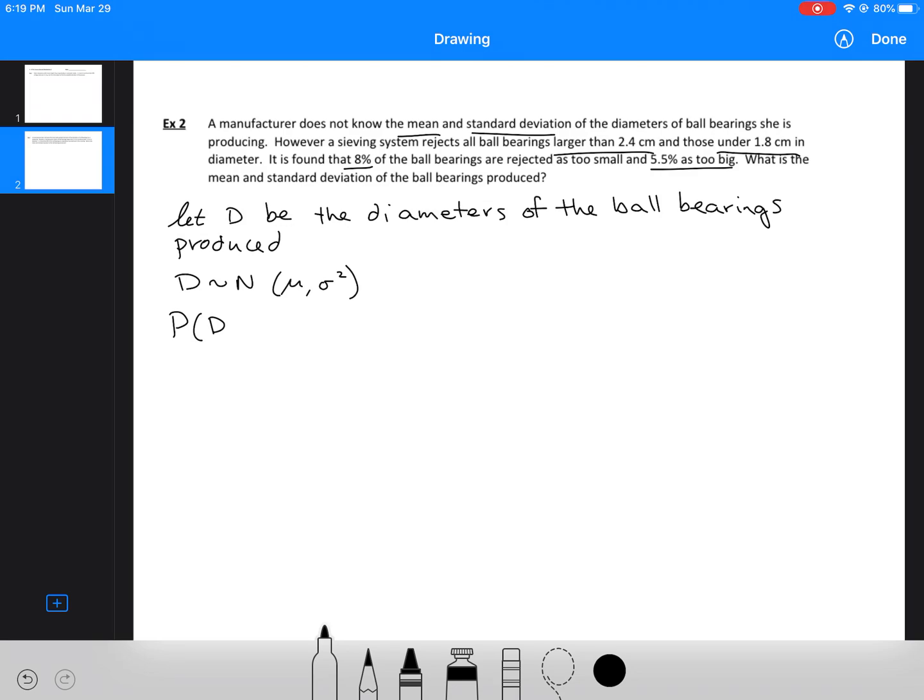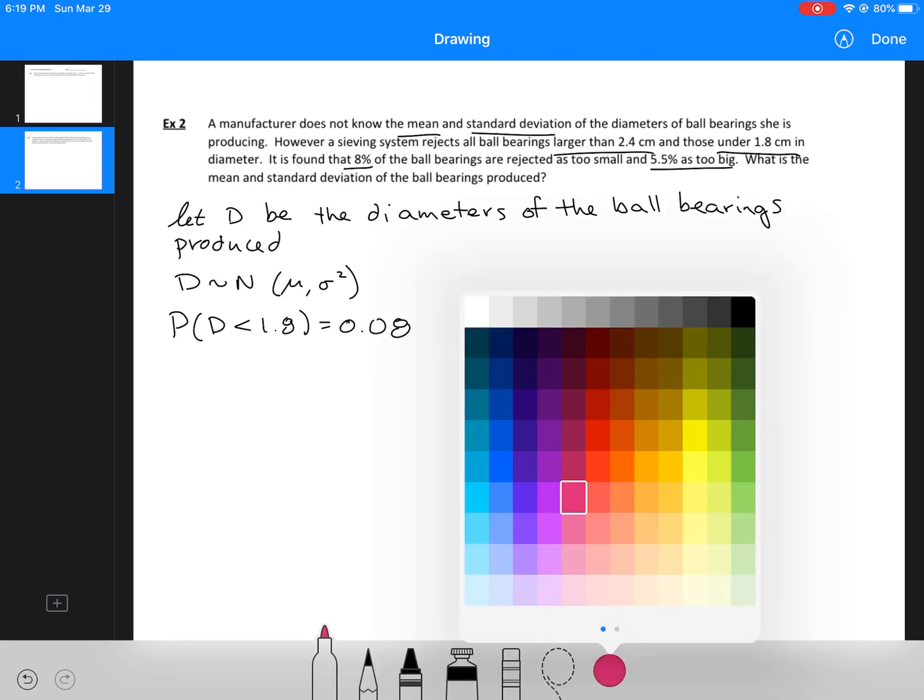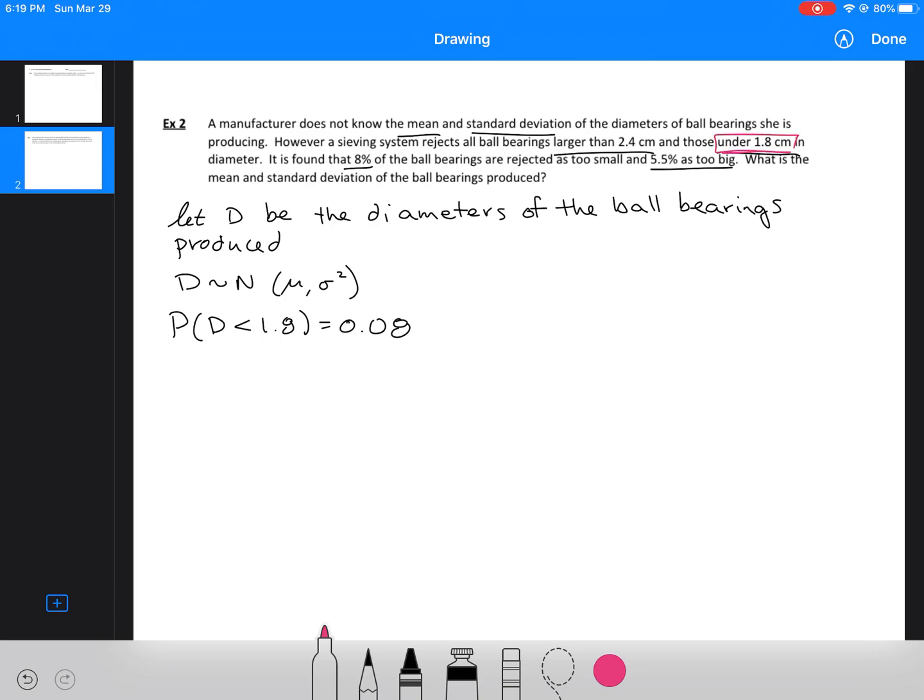We do know that the probability that it is less than 1.8 is equal to 0.08. So that I've highlighted in pink. The other thing that we know I've highlighted in blue. Just so we can match all those items together. So we've got less than 1.8 and greater than 2.4. So that's what we know.